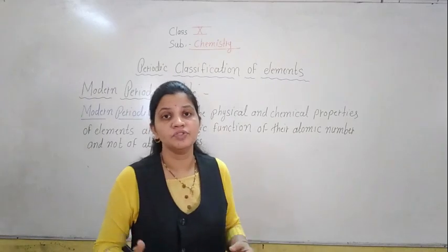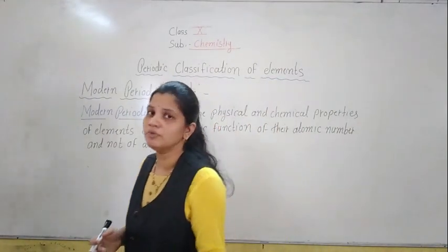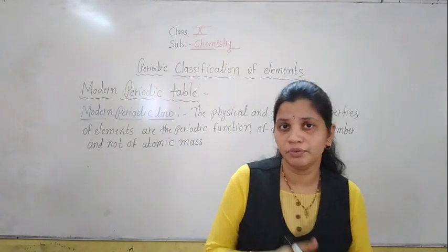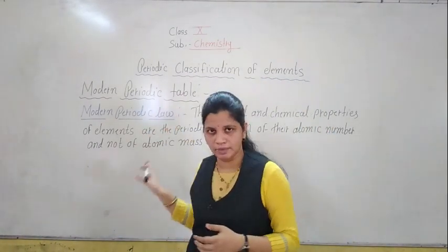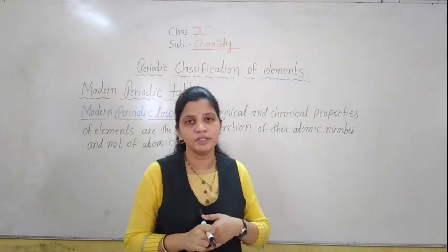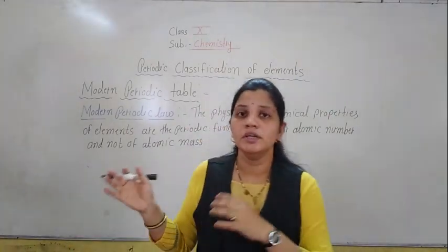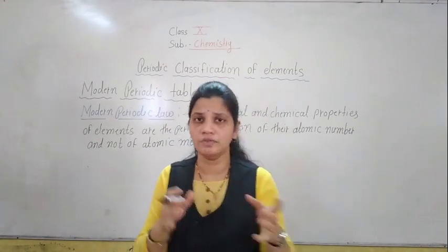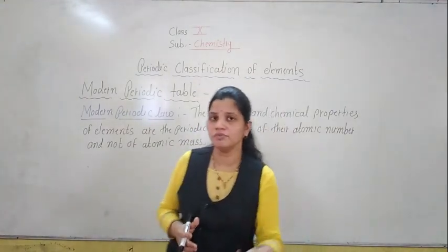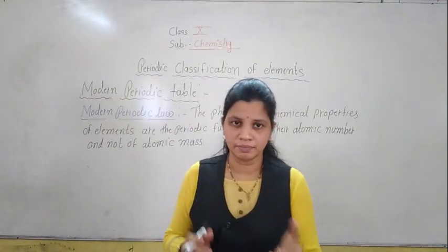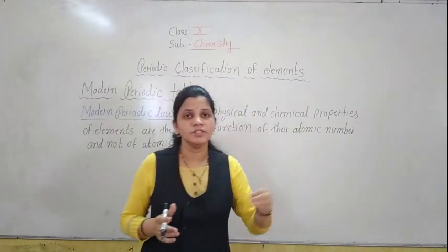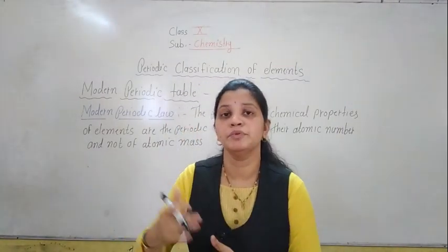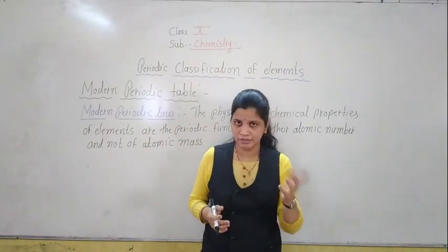Now we are talking about the periodic table which we are using nowadays — it is there in your textbook also. Before this lecture, we discussed that Mendeleev was one of the scientists who placed all 63 elements in his periodic table. It was very famous, but there are some drawbacks, which we have also discussed. He arranged elements according to increasing order of atomic masses, and there are two elements whose atomic masses are different yet their positions are also different — that was one drawback, and more drawbacks we have discussed.